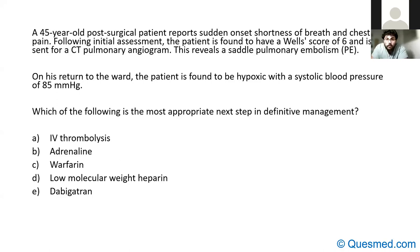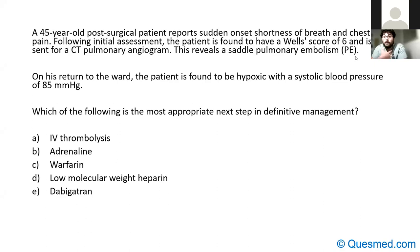Sudden onset shortness of breath and chest pain — we've revealed a saddle PE. A saddle PE means it's extending into both pulmonary arteries, which is always severe. Although, amazingly, some patients can be surprisingly well with this. The key finding here is the patient is hypoxic, and the systolic blood pressure is falling — which is what we would expect with a massive PE.